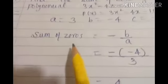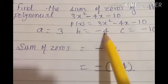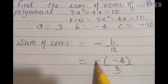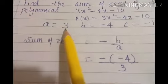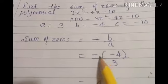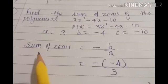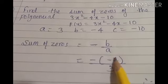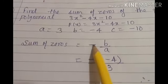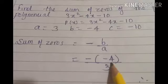So what is the formula for sum of zeros? The formula is minus b upon a. The value of b is minus 4, so we have minus(minus 4) upon 3. Minus of minus is plus, so that gives plus 4 upon 3. We directly use the formula: sum of zeros = minus b upon a. The minus sign is from the formula, and minus 4 is the value of b. So the final answer is: sum of zeros = 4/3.